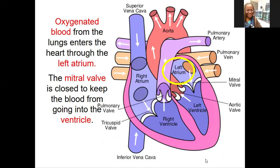After the blood comes back from the lungs through pulmonary circulation and exchanges the gas, it is now oxygenated. Remember, the right side of the heart is unoxygenated. We've gone to the lungs and the alveoli to pick up the oxygen, and now we are oxygenated. The oxygenated blood is now in the left atrium — so the left side of the heart has oxygenated blood.